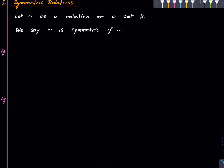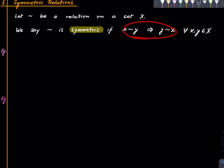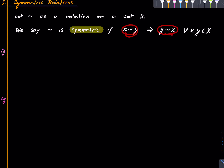Now for another special class: symmetric relations. Suppose tilde is a relation on a set X. We say tilde is symmetric if whenever x tilde y, we also have y tilde x. The word 'symmetric' is chosen because it is not skewed — one direction implies the other direction.